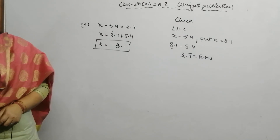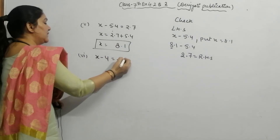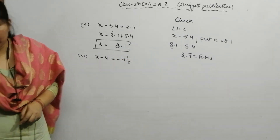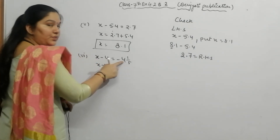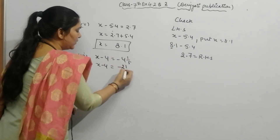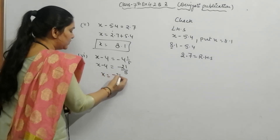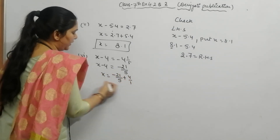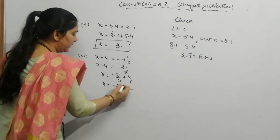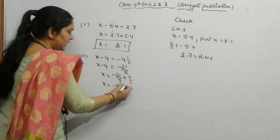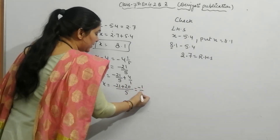Now the last part. Part 6 is: x minus 4 is equal to minus 4 and 1 by 5. Convert the mixed fraction: 5 times 4 plus 1 equals 21, so minus 21 by 5. The minus 4 moves to the right as plus, so x equals minus 21 by 5 plus 4 by 1. LCM is 5: minus 21 plus 5 times 4 is 20. Minus 21 plus 20 gives minus 1. So x equals minus 1 by 5.